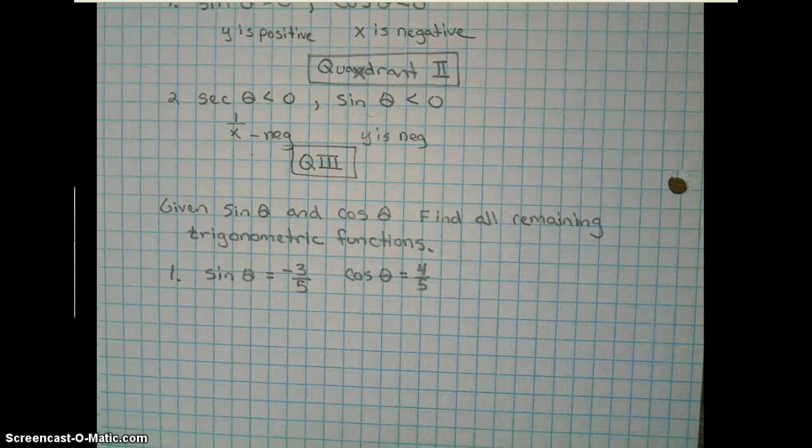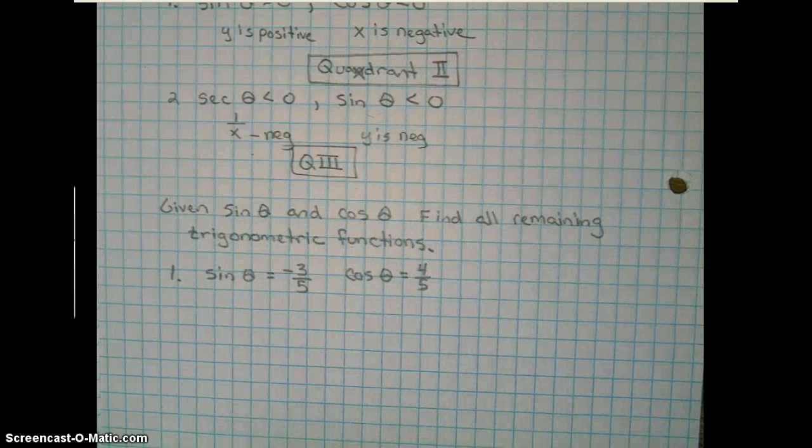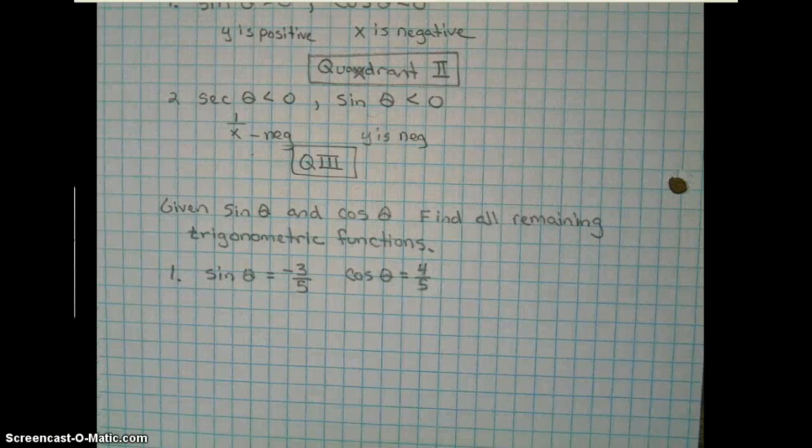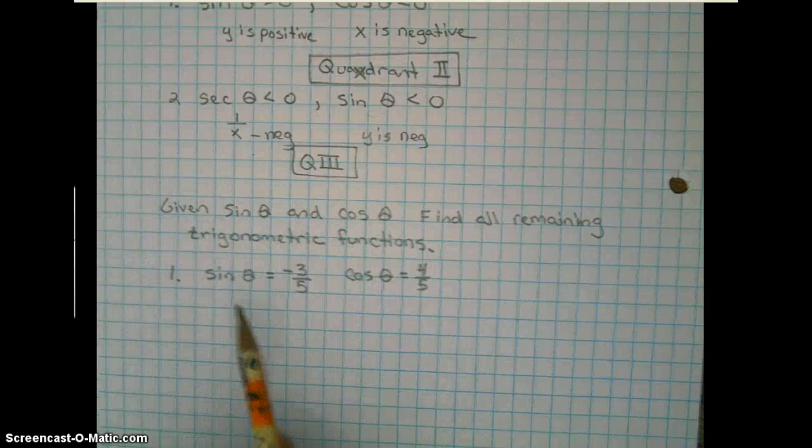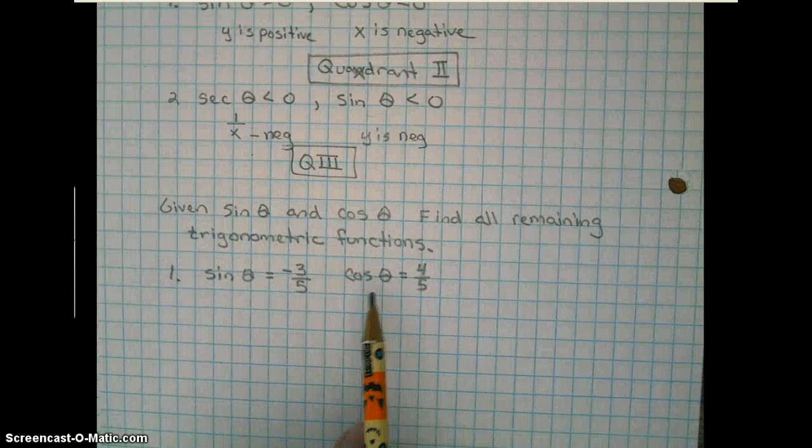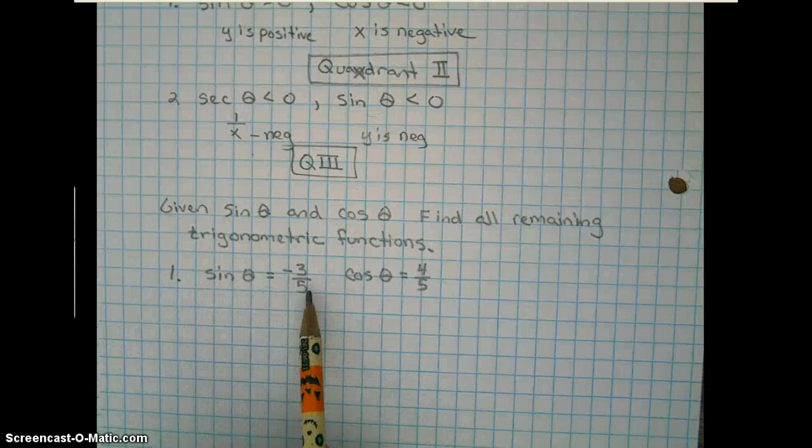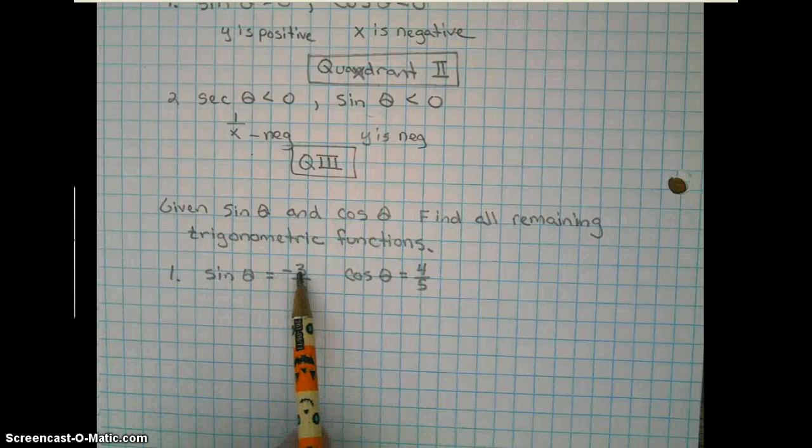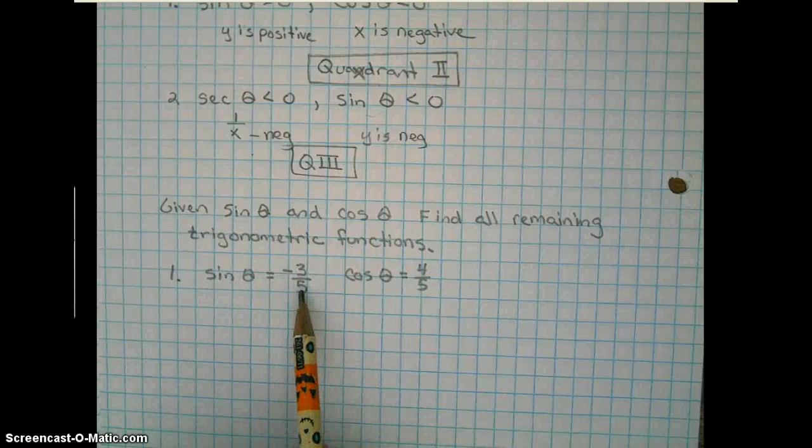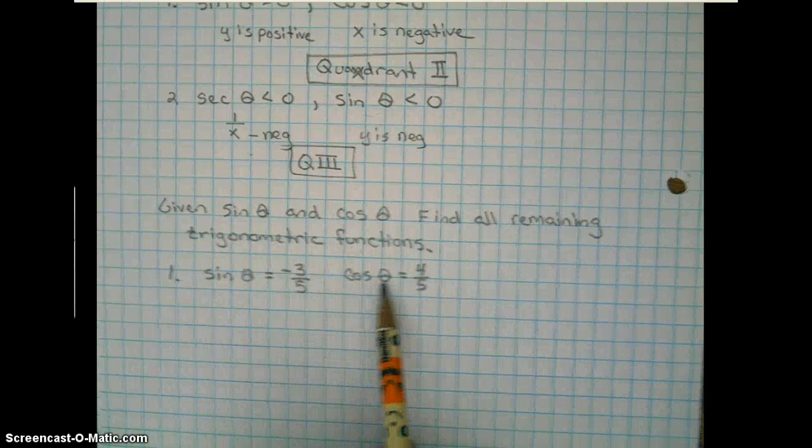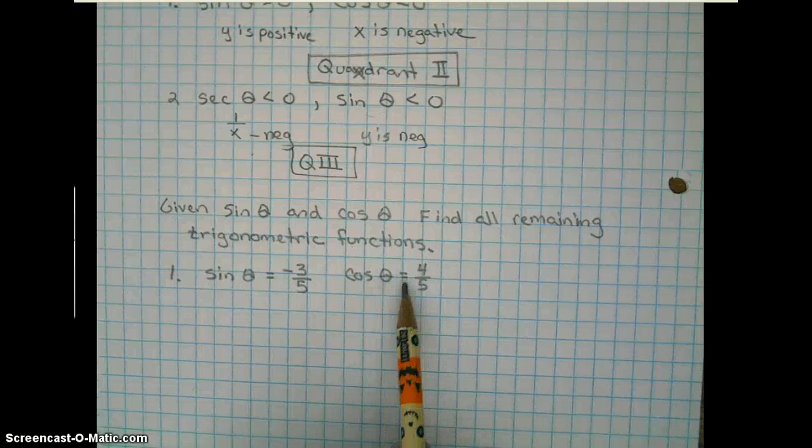Given the sine of theta and the cosine of theta, find all remaining trigonometric functions. Well, if you look here, you can go about it a couple ways. First, you can look at this as y over r by definition, y being negative 3 and r being 5. The negative would have to go on the top because the radius cannot be negative. And here you could look at the cosine of theta as being x over r.